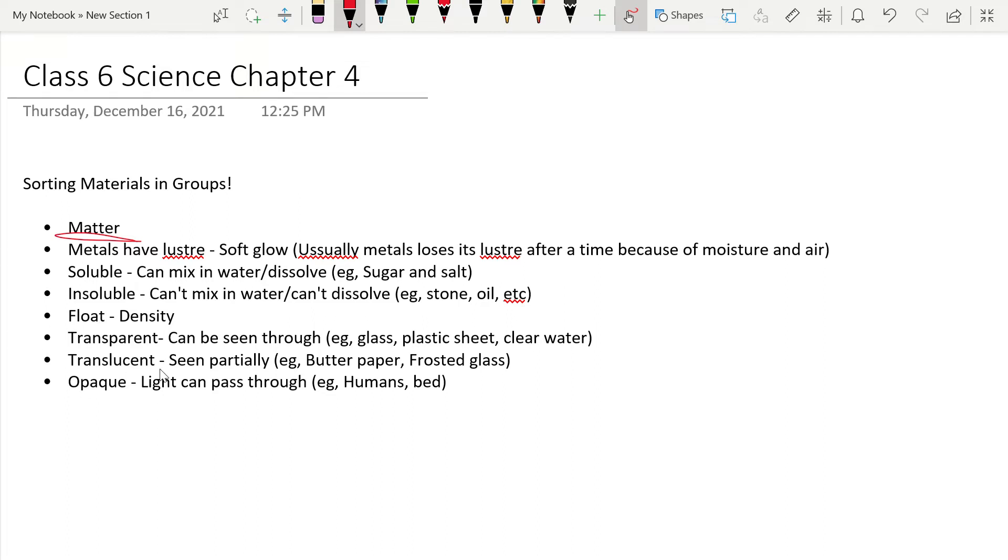There are three types of things in our world. It's transparent, translucent, and opaque. Transparent is can be seen through, which is glass, plastic sheet, some plastic sheets, and clear water. Or translucent, which means seen partially, which is like butter paper or frosted glass.